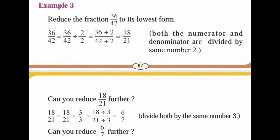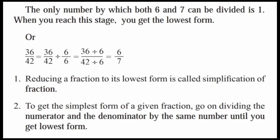Example 3: Reduce the fraction 36/42 to its lowest form. 36/42 = (36÷2)/(42÷2) — 2 eighteens are 36, 2 twenty-ones are 42, giving 18/21. Can we reduce 18/21 further? 18/21 = (18÷3)/(21÷3) — 3 sixes are 18, 3 sevens are 21, giving 6/7. Can we reduce 6/7 further? The only number both 6 and 7 can be divided by is 1. When you reach this stage, you have the lowest form.